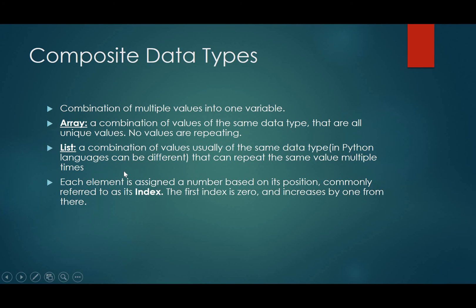So if we were to look at an example, one other thing I want to mention is that each element is assigned a number based on its position. Now, this is really commonly referred to as its index. And in computers, the first index is always 0 and increases by 1 from there. So it goes 0, 1, 2, 3, not 1, 2, 3, 4. So it starts on 0. That's the first position in computers, right? It thinks in 0s, thinks in binary, 0s included. 0 is a number.